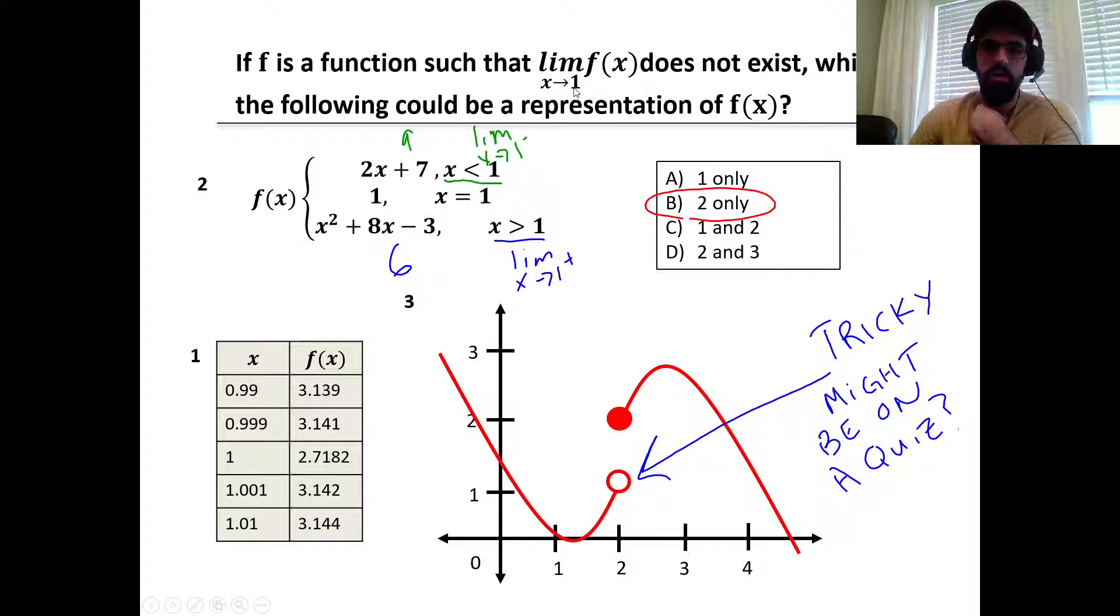The right bound as x approaches 1 from the right, that's when x is greater than 1. Let's direct substitute 1 in for x squared plus 8x minus 3. That would be 1 plus 8 minus 3, which is 6.